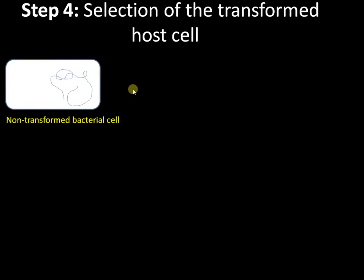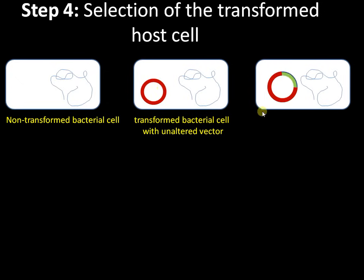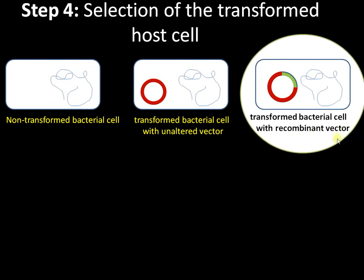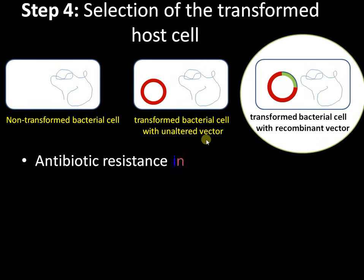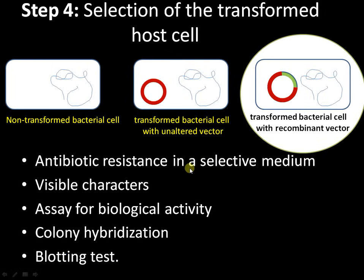Step 4: after step 3, we get three types of colonies. First, non-transformed bacterial cells with no change. Second, transformed bacterial cells with an unaltered vector — the cell has taken up the vector but without our gene of interest. Third, transformed bacterial cells with our recombinant vector — and this is the colony we need to select. The majority of colonies belong to the first two groups. There are different ways to select our target colony: growing in selective antibiotic medium, selecting for visible characters, adding a substrate for enzymatic color reactions, or using colony hybridization and blotting tests.